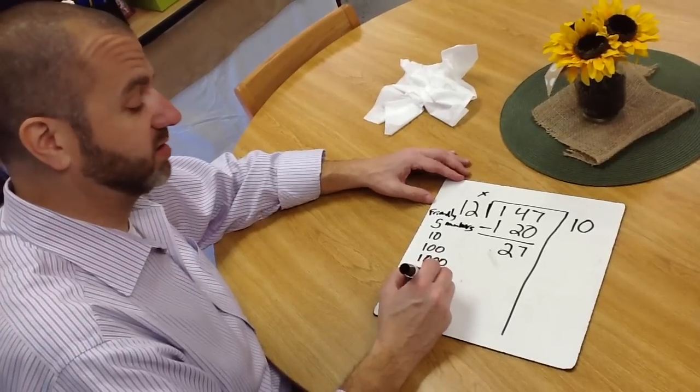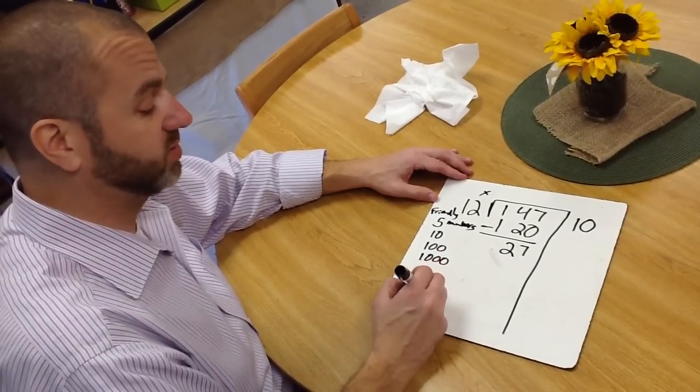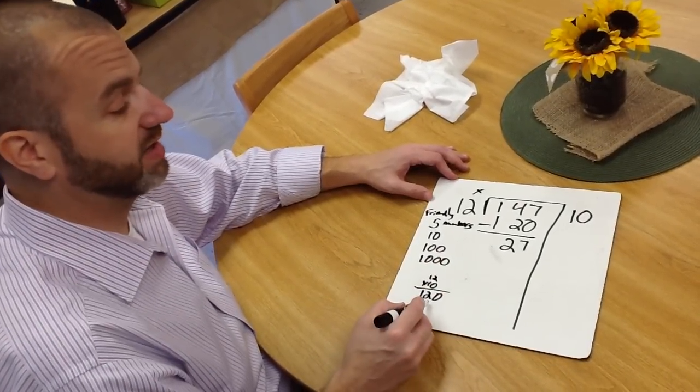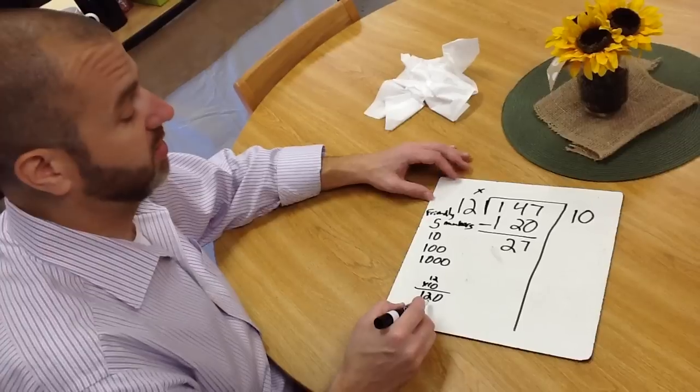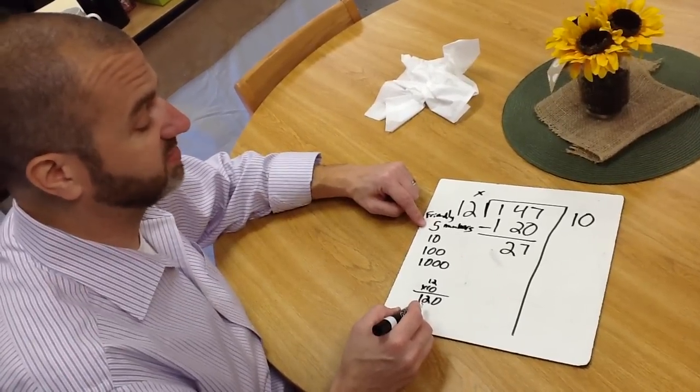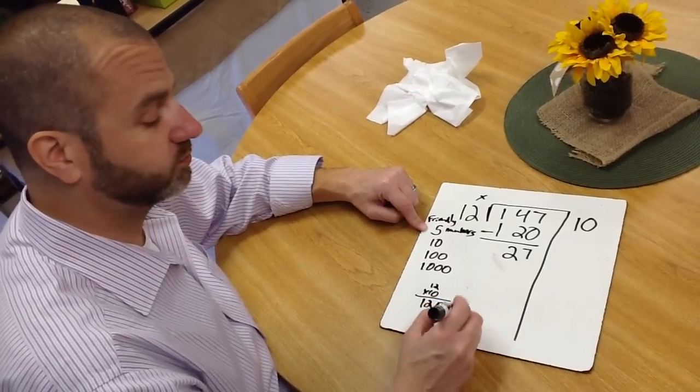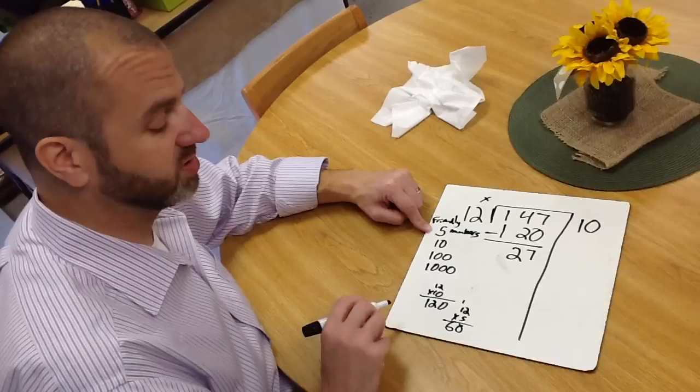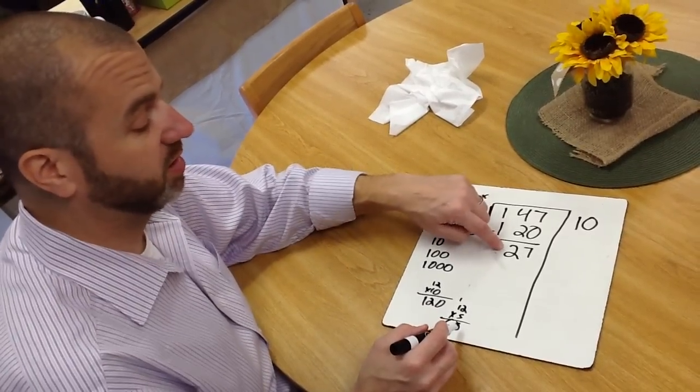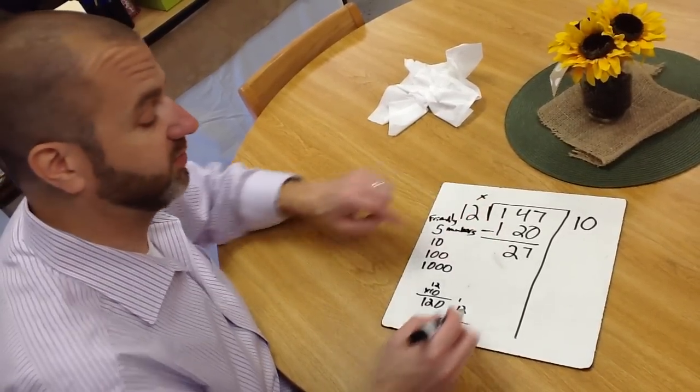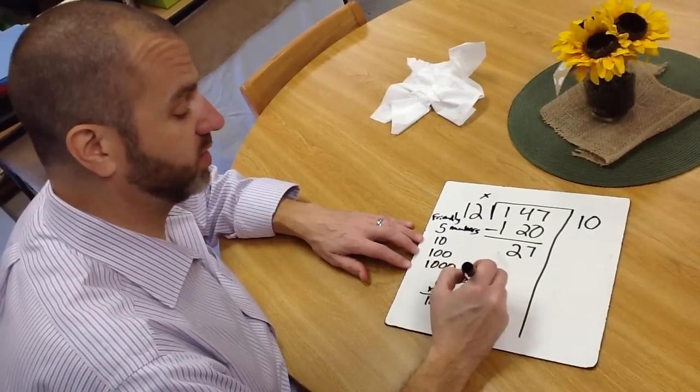Well, we ask the kids, is it going to be 10 times? And they're going to say no, because that gives us 120. So we're going to drop to 5 and say, can we get 5 groups? And the idea is that students see, nope, it's 60, which is quite a distance from 27, so maybe they're going to try 3.